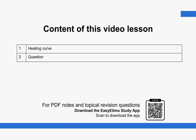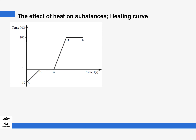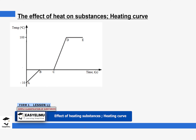In our lesson we are going to look at a heating curve, discuss its components, and explain how to interpret it. We will discuss what happens to the particles in each state at each level of the curve. Later on we are going to look at a question in regards to what we will have discussed in this lesson.